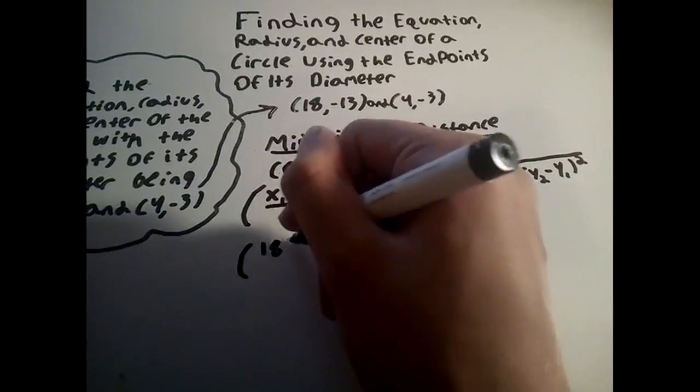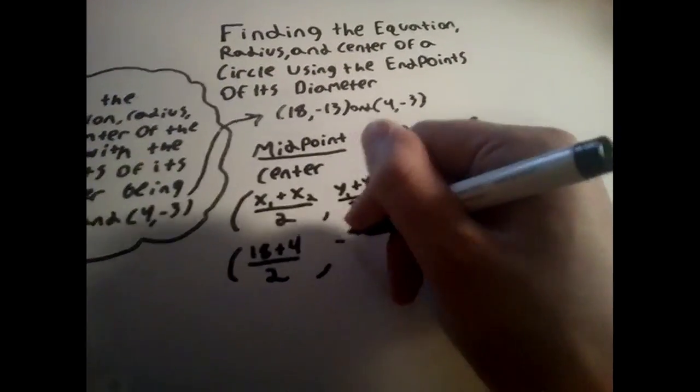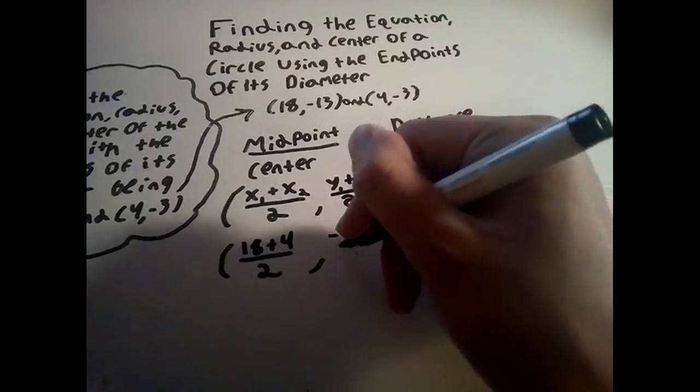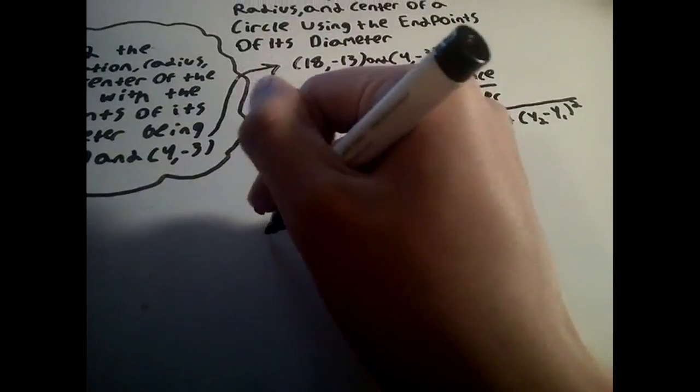Now that we have these formulas, we can just plug in our points. Getting 18 plus 4 divided by 2 comma negative 13 plus negative 3 over 2. When simplified, we get our center 11 comma negative 8.